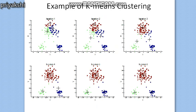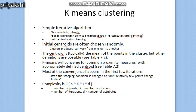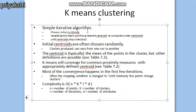After six iterations, the final clusters are formed. You can see which data points belong to the first, second, and third cluster respectively. To summarize how the algorithm works: first choose data points as initial centroids, then find the distance of each data point to the closest centroid and assign it accordingly. This is a simple iterative algorithm — choose initial centroids, then repeatedly assign each point to the nearest centroid and recompute the cluster centroid until the centroid values stop changing.